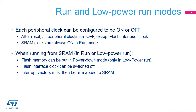Each peripheral clock can be configured to be on or off in run and low-power run modes. By default, all peripheral clocks are off except the flash interface clock. The SRAM clock is always on in run mode. When running from SRAM in run or low-power run modes, the flash memory can be put in power down mode thanks to software, and the flash clock can be switched off. The flash memory must not be accessed when it is switched off. Consequently, interrupt vectors must be mapped in SRAM using the Cortex-M4 vector table offset register.